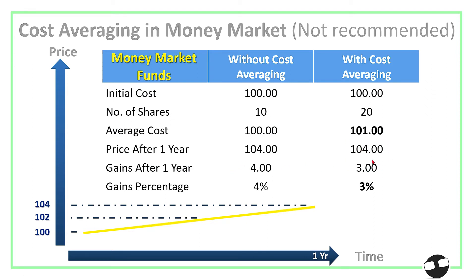Since you bought 20 shares at different intervals, your average cost went up to 101. With the price after one year still at 104, your gains per share are now only 3 pesos — a gains percentage of around 3 percent, compared to 4 percent without cost averaging. This is the disadvantage of applying cost averaging in money market, because these investments trend steadily upward, so you keep buying more and more expensive shares.